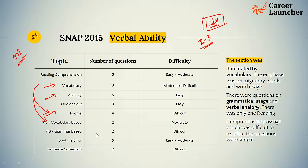Grammar-based questions are not too many — there are about two here, and 'spot the error' is basically English usage and grammar, so there are about seven questions in that area. They are very simple. However, last year the grammar-based fill-in-the-blank was slightly on the difficult side, but in general for SNAP it's not very difficult. Even if it is difficult, the options allow you to eliminate — do focus a lot on elimination, it becomes very important.